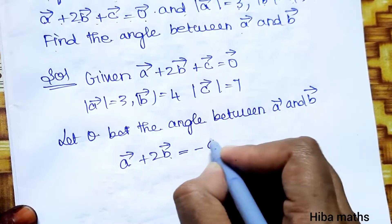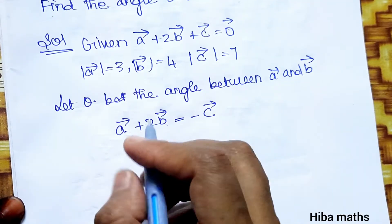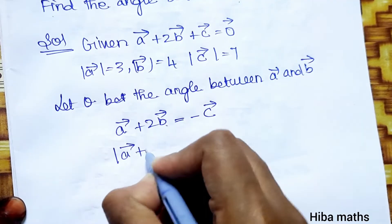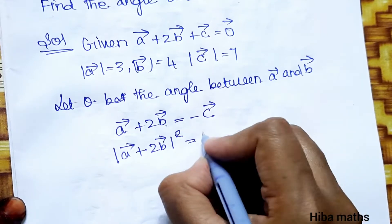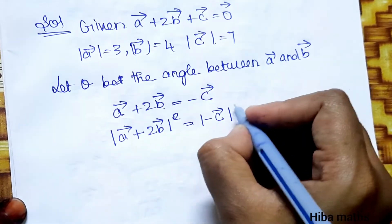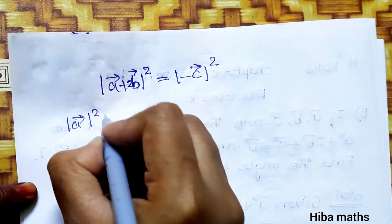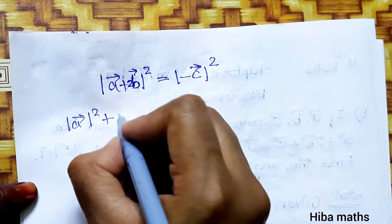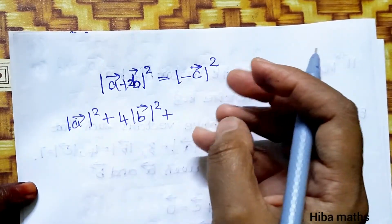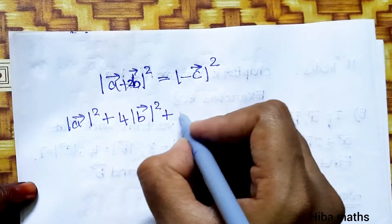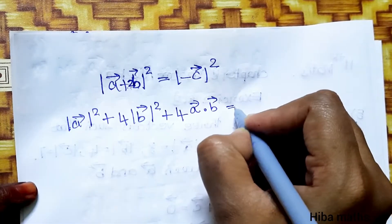From the given equation, a vector plus 2b vector equals minus c vector. Taking the square on both sides: modulus of (a vector plus 2b vector) whole square equals modulus of c vector squared. Expanding: a squared plus 4b squared plus 2 into 2 into a vector dot b vector, which gives a squared plus 4b squared plus 4(a vector dot b vector).